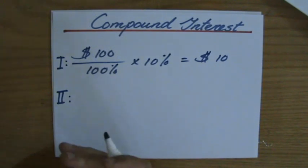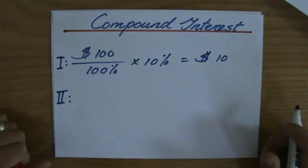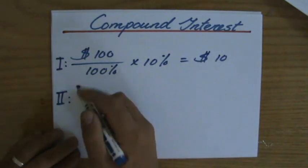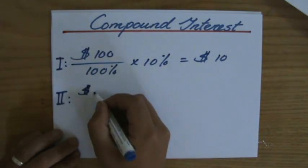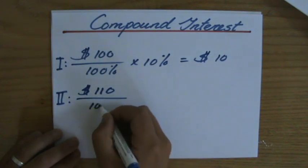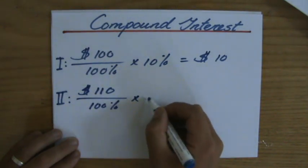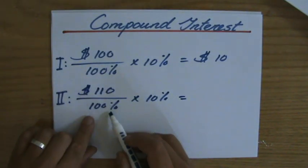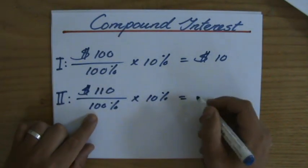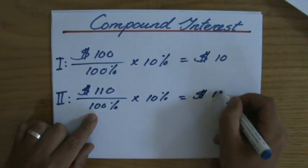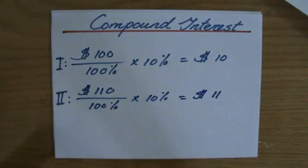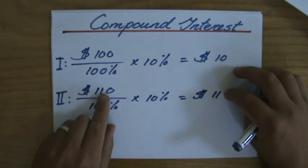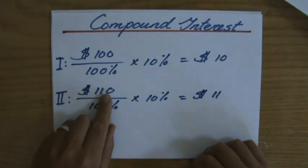Now, year two. How much money is in my bank account? It's not 100 anymore. It is 110. So, for the second year, I have $110. I'm still getting 10% over that amount, but 110 divided by 100 times 10 is $11. So, the second year, I'm getting $1 more interest, because there's more money in my bank account. It's a compounded figure.